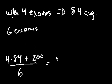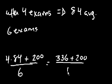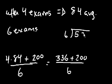And what's this average? Well, 4 times 84 we already said is 336, plus 200 over 6. So that's 536 over 6.